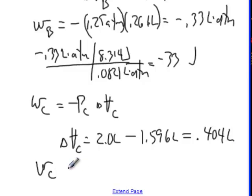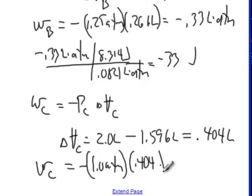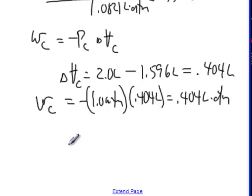So work during expansion C is negative pressure, 1.0 atmospheres. That's the pressure under expansion C, times 0.404 liters, and that's obviously 0.404 liter atmospheres. I'm not going to go through the details of the conversion. It converts to negative 40.9 joules. That number should be a negative up there.